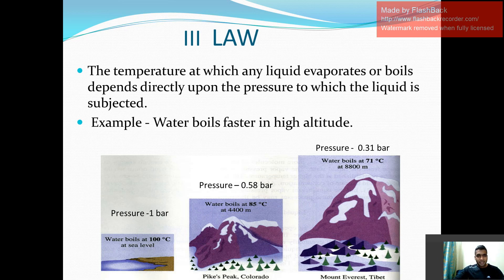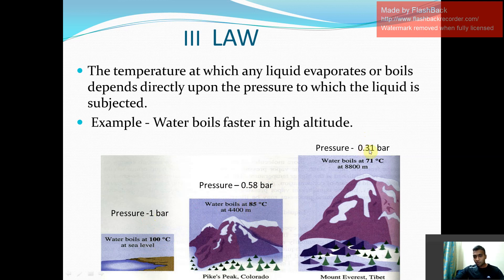I have already explained this with the help of the example of altitudes. Your water boils at 85 degree Celsius when the pressure is less than 1 bar. When the pressure is 0.58 bar, your water is boiling at 85 degree Celsius. When the pressure is 0.31 bar, your water is boiling at 71 degree Celsius.